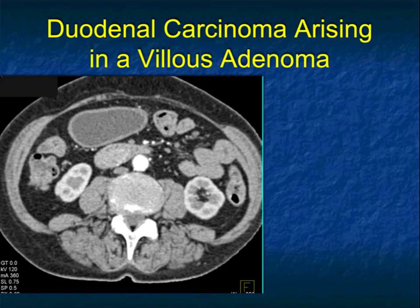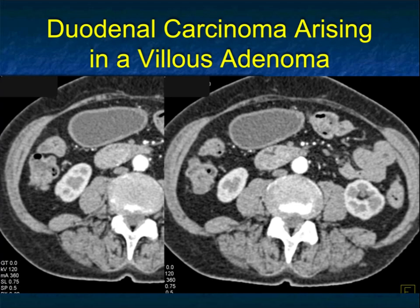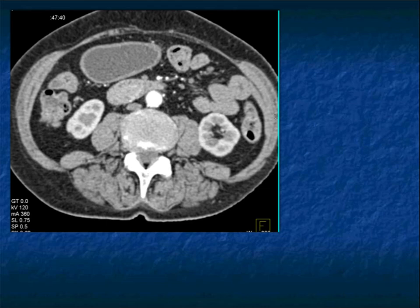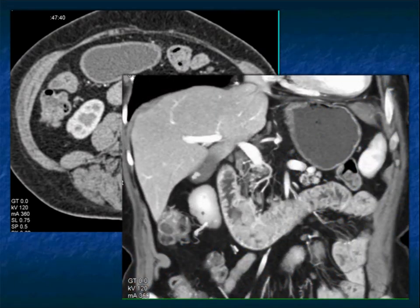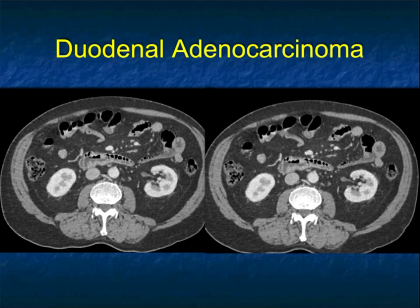Small bowel tumors are often missed at initial presentation. Here's a patient with a tumor in the third and fourth portion of the duodenum — when you look at the axial views, you're not really impressed; it could just be normal duodenum. But now look at the coronal view: you really see the infiltration from the second to the fourth portion of the duodenum. This is a good example of where distension of the duodenum with water is critical, and when the tumor is infiltrating, the axial views may not be impressive, but the coronal is indeed very impressive.